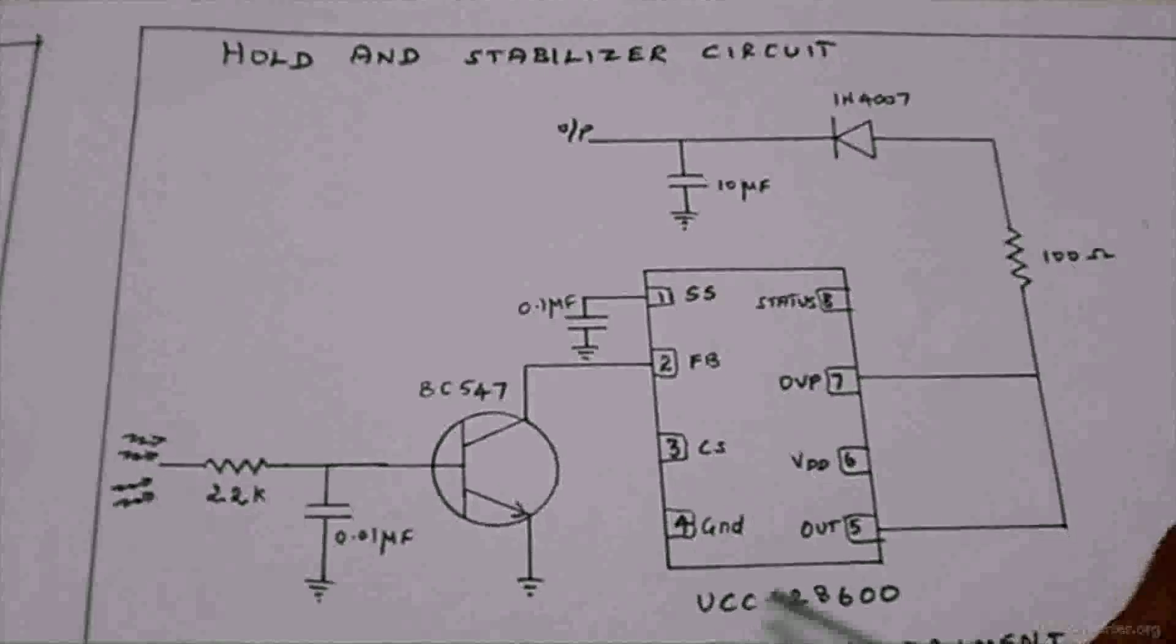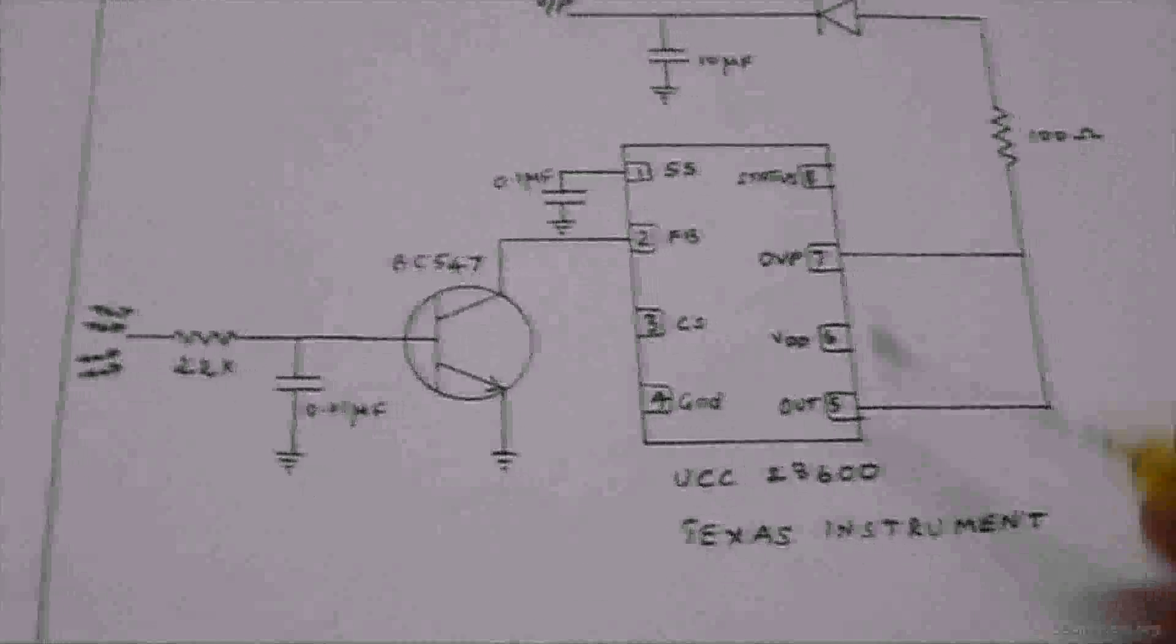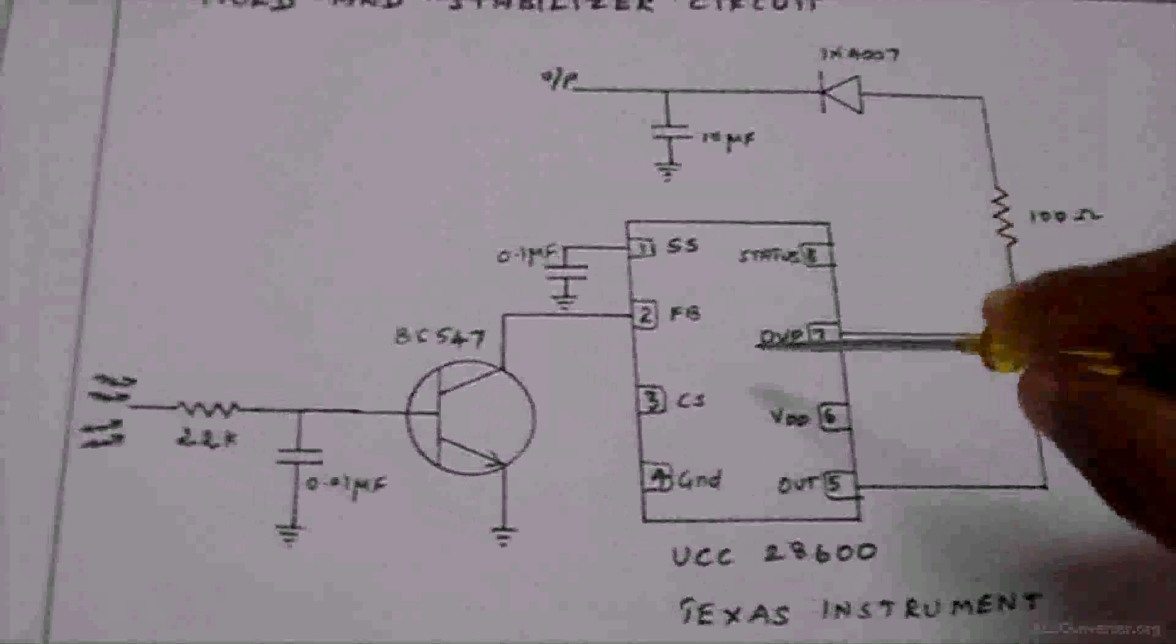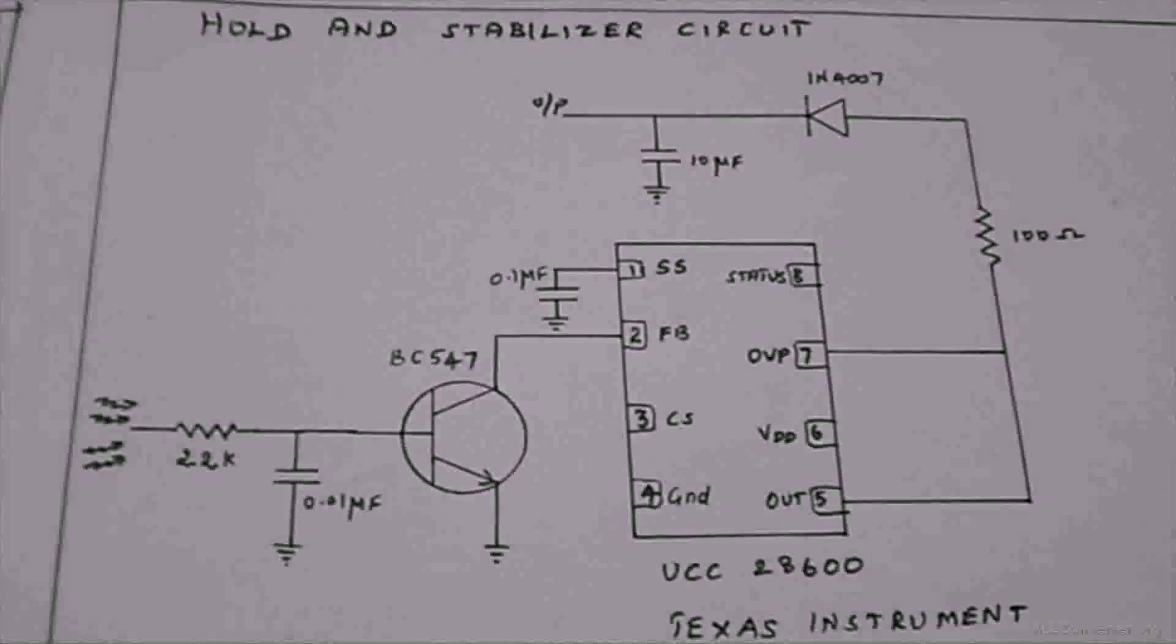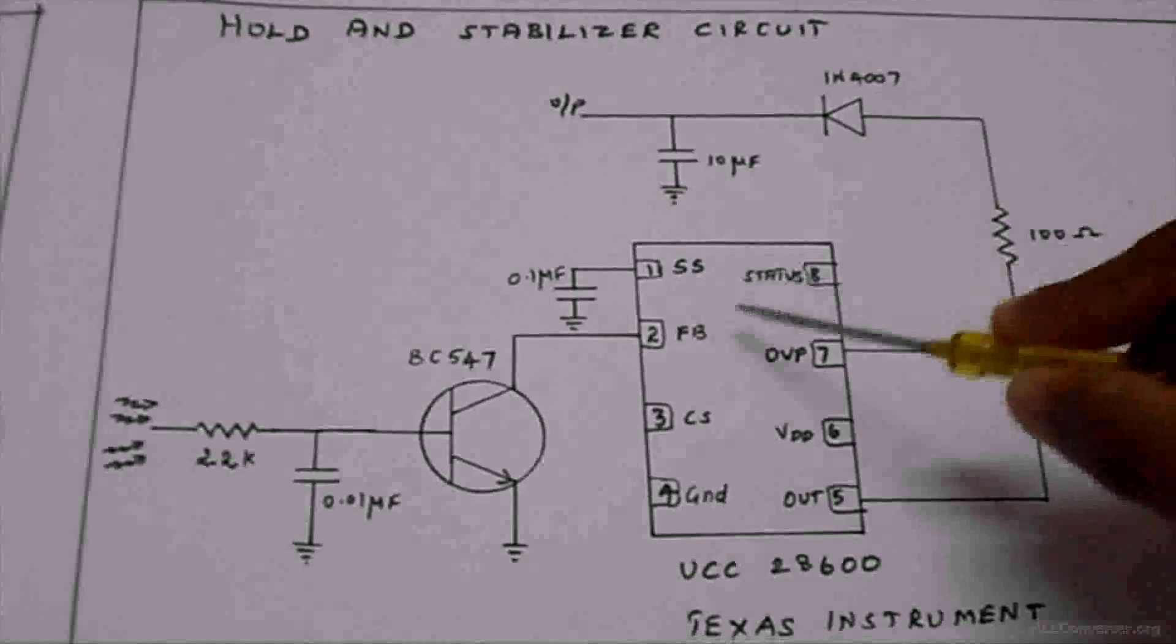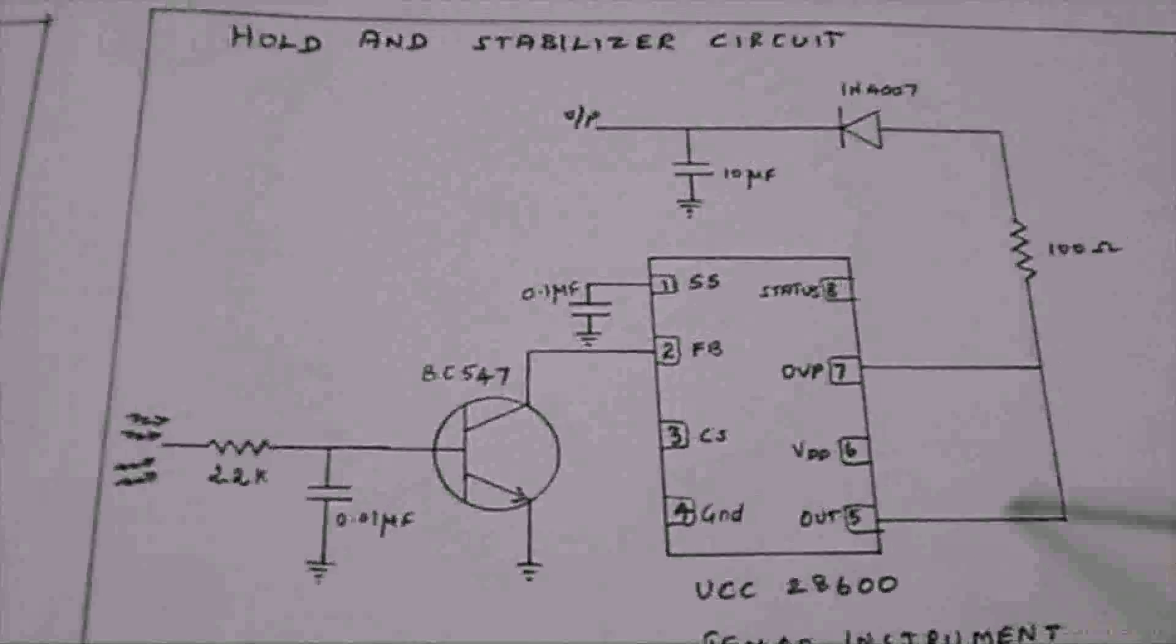The IC is UCC28600, which is a Texas Instruments IC. In this IC, it acts as a bridge and hold circuit. It will hold the charge for a few seconds, and the charge is delivered to the discharge circuit.